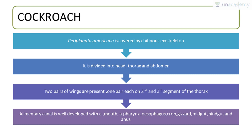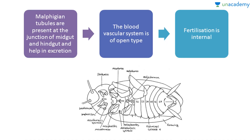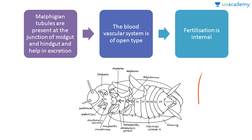The next animal is the cockroach, with the scientific name Periplaneta americana. It is covered by a chitinous exoskeleton and its body is divided into head, thorax and abdomen. The thorax has three segments with two pairs of wings — one pair each on the second and third segments of the thorax. The alimentary canal is well developed, with mouth, pharynx, esophagus, crop, gizzard, midgut, hindgut and anus. A peculiar feature is the Malpighian tubules, present at the junction of the midgut and hindgut, which help in excretion. The blood vascular system is of the open type and fertilization is internal.